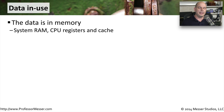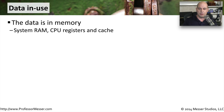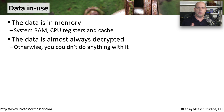If the data is not in motion and the data is not at rest, then the data is in use. It's in the memory of a device, and it's being accessed by an application to perform calculations, to look up and gather information. This is usually stored in the system memory — it's in CPU registers, it might be in a cache, but it's somewhere inside of this computing device. To be able to use this information, it has to be in a decrypted form. You cannot encrypt the data and then have the application perform some type of action to the data if it can't possibly read it.